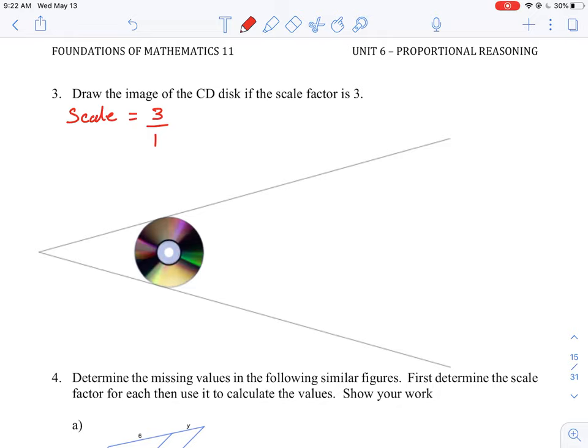If we look at our diagram here, it looks like they're telling us that the CD or the object we're supposed to draw compared to the CD given here is supposed to be larger, given by the two rays that are going out. So that means if we looked at the diameter of this CD